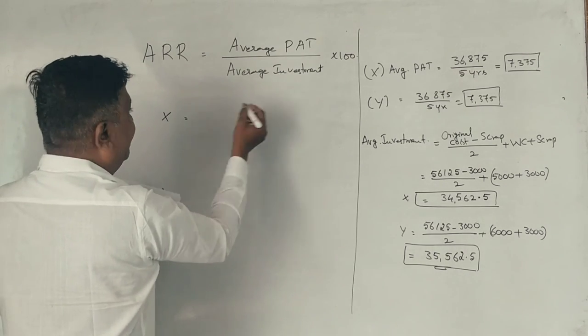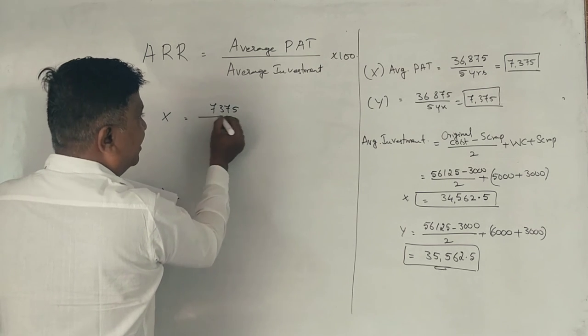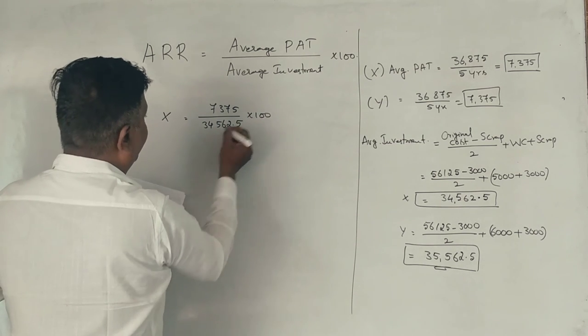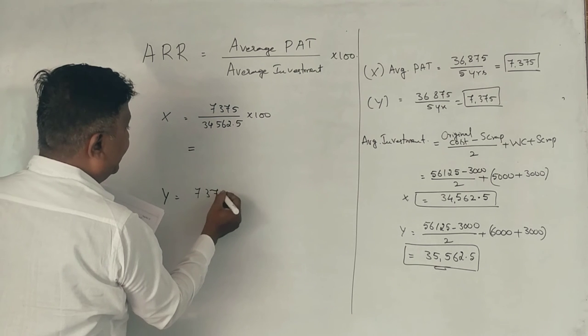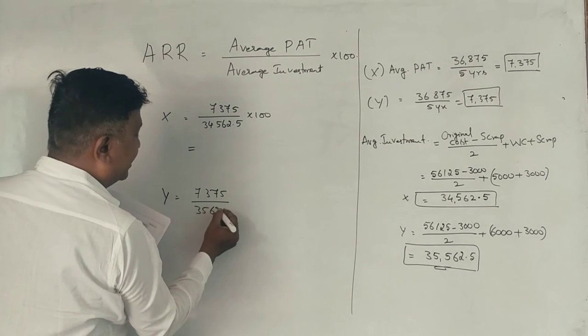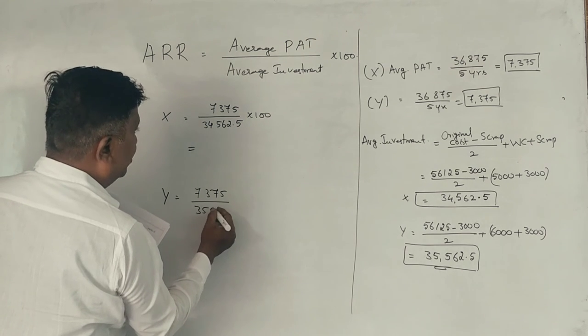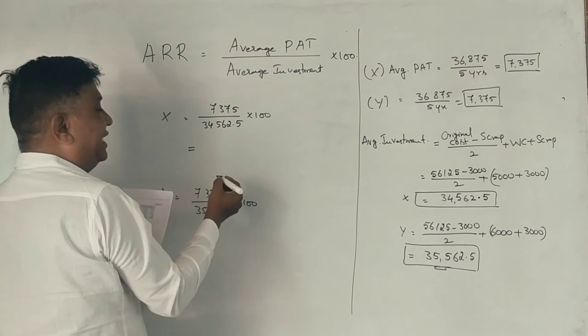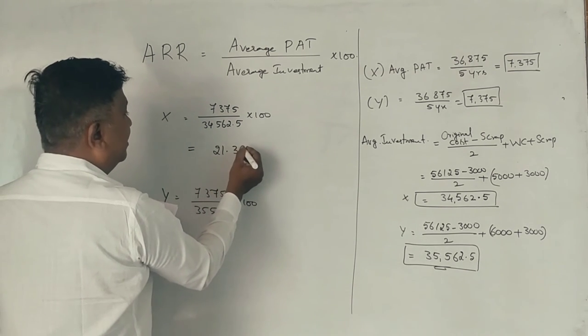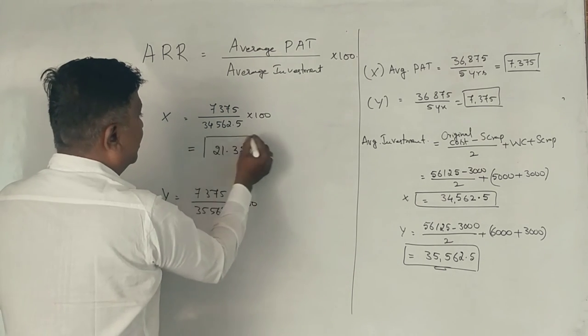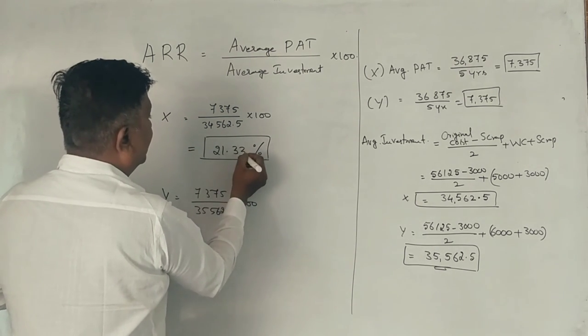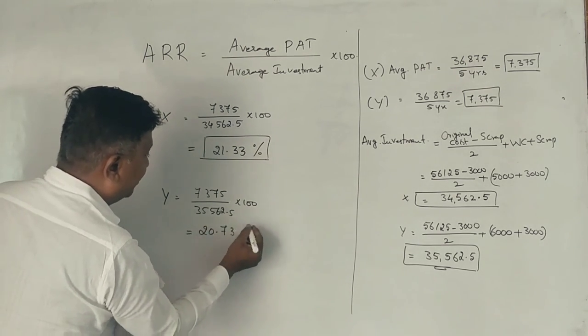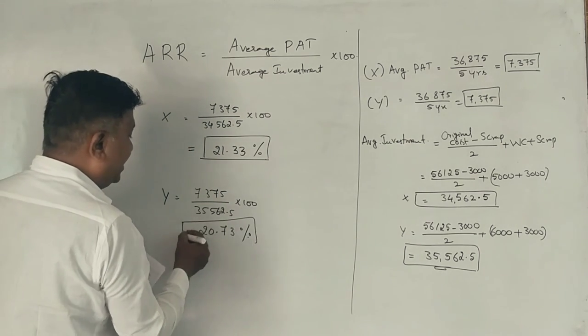Average profit is $7,375 divided by $34,562.50 into 100. $7,375 divided by $35,562.50 into 100. This is 21.32%. Now tell me which one is more?